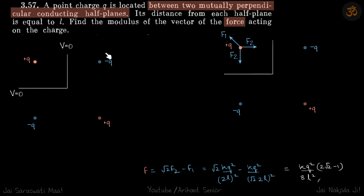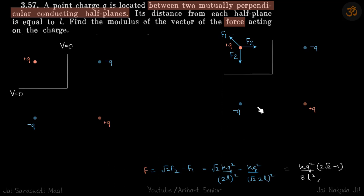Now that we know the three imaginary charges to place, we need to find the force on the original plus q due to these three charges. This length is given as L. The attractive force toward each minus q is F2 — there are two such forces — and the repulsive force from the plus q image is F1. The net force is root(2)·F2 minus F1, directed toward the origin, the intersecting point of the planes. Simplify and you get your answer.